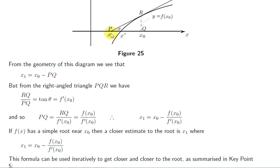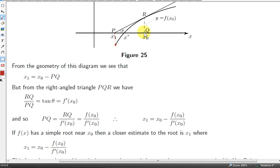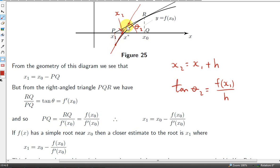What I mean is the following: just as we projected from x₀ up to the curve for our first approximation, now x₁ is our next approximation — we project to the curve, construct a tangent just as we did at x₀. We can calculate this new point in exactly the same way. Let's call the point where this tangent crosses the x-axis x₂.